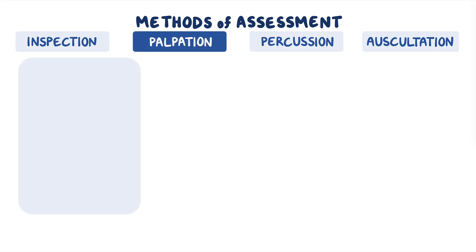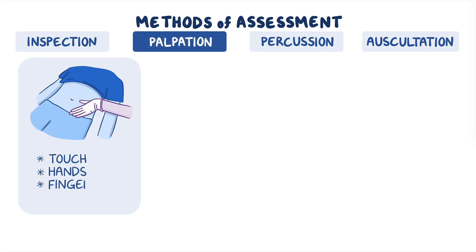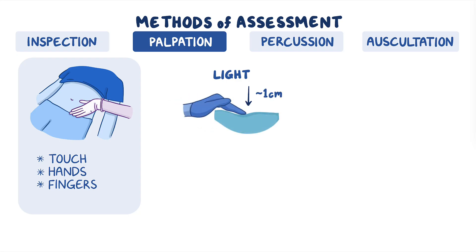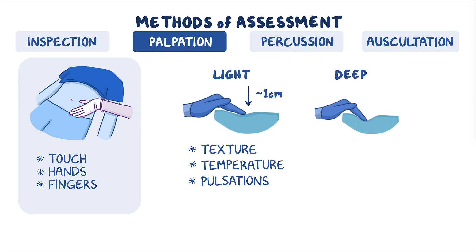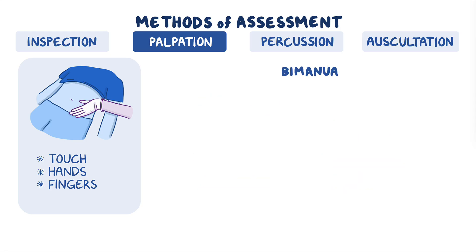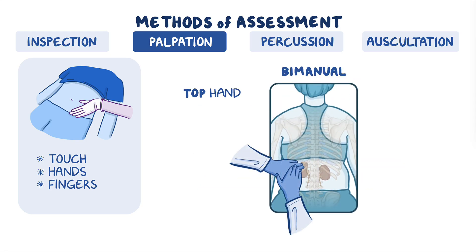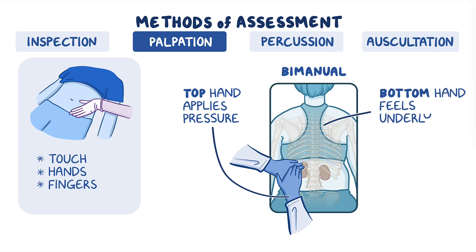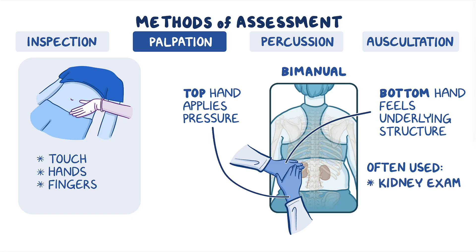Next is palpation, which involves the sense of touch using your hands and fingers. Palpation can be light or deep depending on the amount of pressure you apply. When doing light palpation, you'll press down about one centimeter to assess characteristics like texture, temperature, or pulsations. With deep palpation, you will apply enough pressure to extend to a depth of about four centimeters so you can assess internal structures for characteristics like size, shape, or mobility. You can also use two hands to perform bimanual palpation — the top hand applies pressure while the bottom hand feels the underlying structures. This technique is often used when palpating the kidney and can be useful if your client is obese.